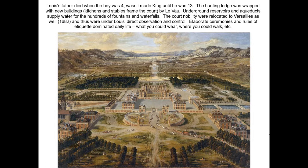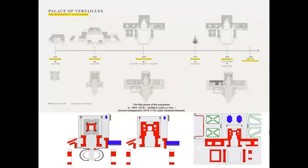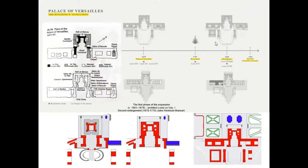The king transformed an initial hunting lodge by renovating and wrapping it with new architecture. Here you can see the initial phase and how the palace grows into its final state — from a still grand building to something where the original structure is dwarfed by remarkable additions. The first big phase of expansion was directed by Louis Le Vau, and the second phase was directed by Hardouin-Mansart. Those are the two architects' names to be aware of.